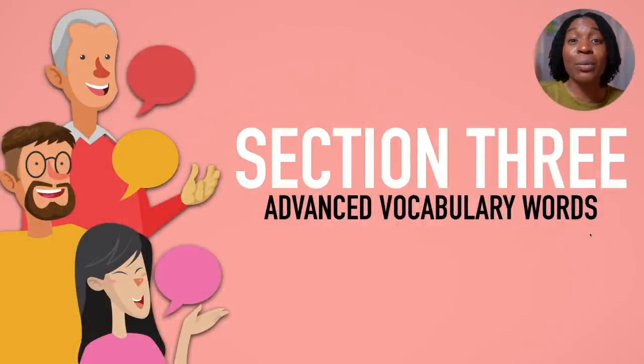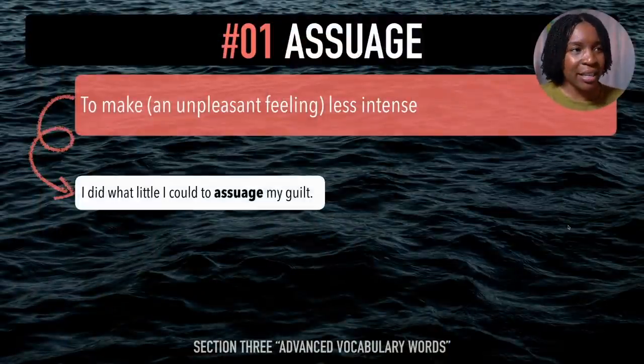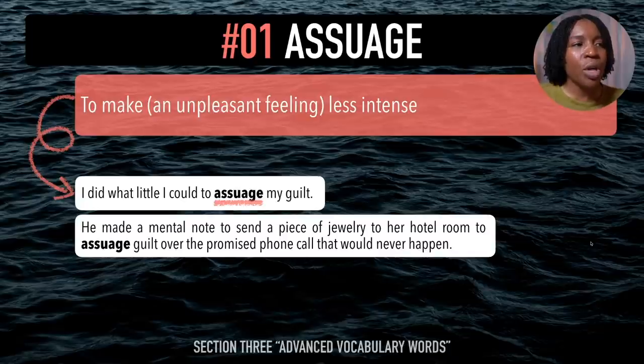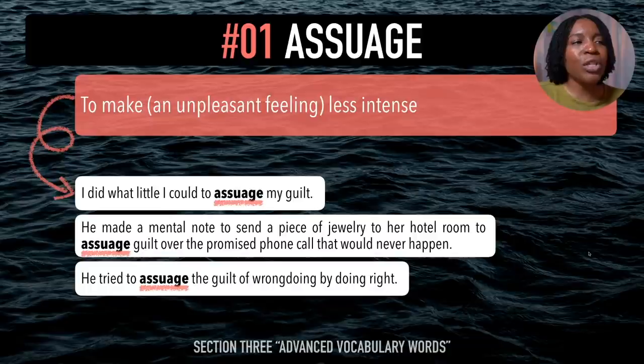In section three we're looking at 10 advanced English vocabulary words. The first is 'assuage'. After me — assuage. Assuage means to make an unpleasant feeling less intense. Example sentences: I did what little I could to assuage my guilt. He made a mental note to send jewelry to her hotel room to assuage guilt over the promised phone call that would never happen. He tried to assuage the guilt of wrongdoing by doing right. Last time — assuage.